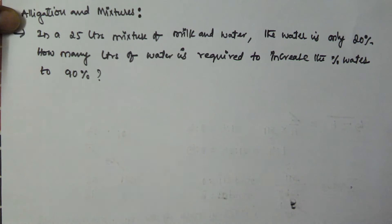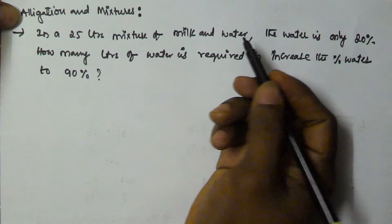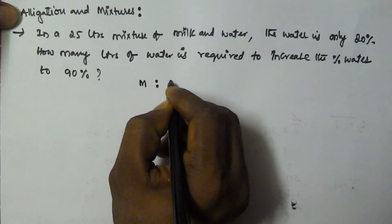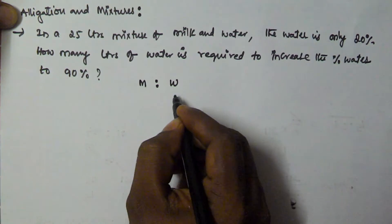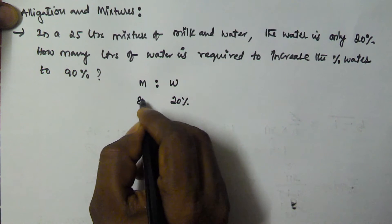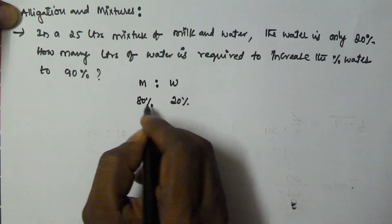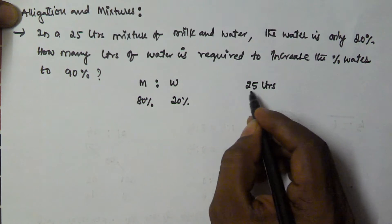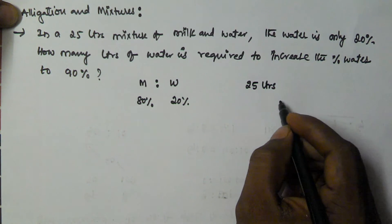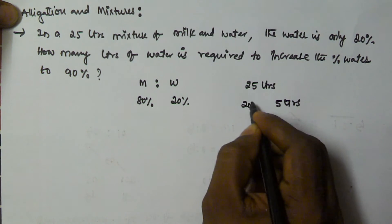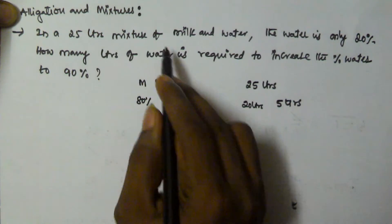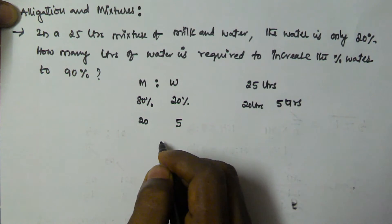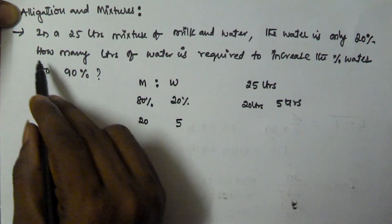So in a 25 liter mixture of milk and water, the water is 20 percentage, which means the remaining 80 percentage is milk. The total mixture is 25 liters. 20 percentage of 25 liters is 5 liters. So that means in 25 liters, 20 liters are milk and 5 liters are water.